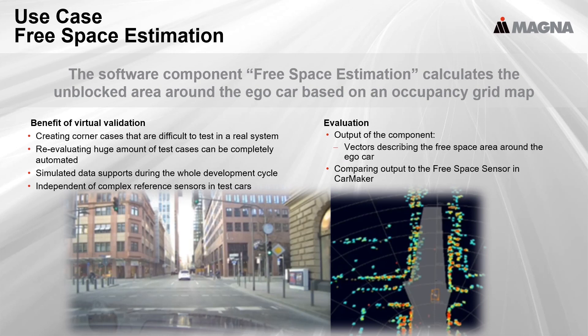The last example is the free space estimation. It calculates the unblocked area around the ego car based on an occupancy grid map — every detection from the radar is put inside this map. The component uses the ego velocity to compensate for movement in this map. Afterwards, it calculates vectors that describe the free space area around the car. The result is compared to the output of the free space sensor in CarMaker. Similar to the object tracking, the simulation allows validation independent of complex reference sensors in the test cars. It can also provide special test cases where the free space is limited by walls, so the size of the area can be compared and the vectors are accurately defined.